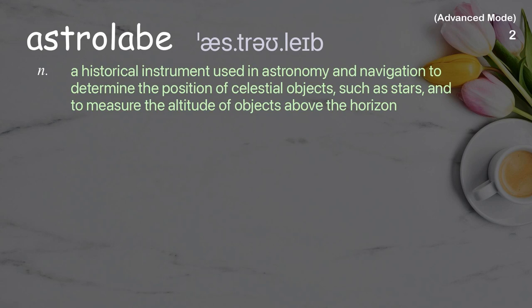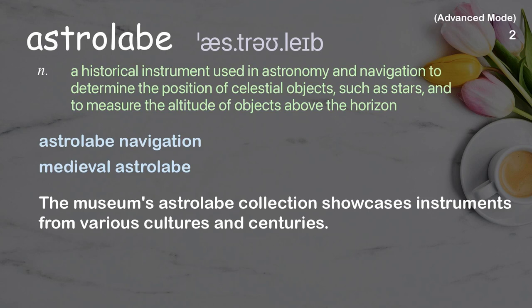Astrolabe: A historical instrument used in astronomy and navigation to determine the position of celestial objects, such as stars, and to measure the altitude of objects above the horizon. Examples: astrolabe navigation, medieval astrolabe. The museum's astrolabe collection showcases instruments from various cultures and centuries.